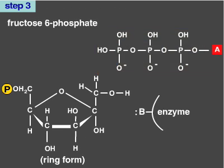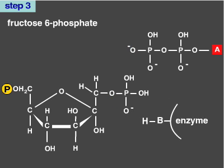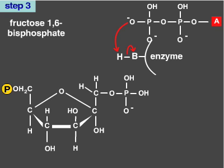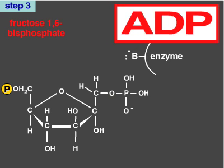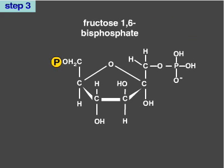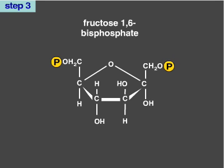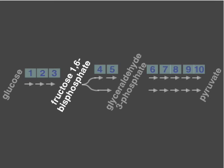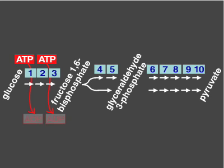In the third step of glycolysis, the enzyme phosphofructokinase uses ATP to phosphorylate fructose-6-phosphate. ADP is released and the molecule fructose-1,6-bisphosphate is formed. This third step, in which the second phosphorylation event occurs, is irreversible and is a major regulatory point in the commitment to glycolysis. The phosphorylations in steps 1 and 3 represent an investment of energy that will be paid back in the later stages of the pathway.